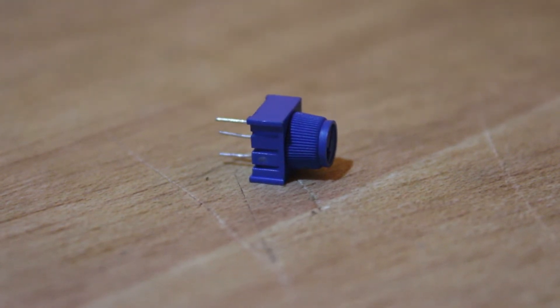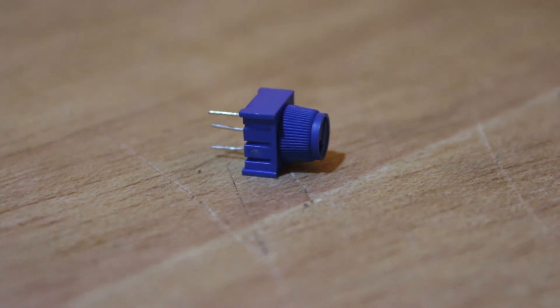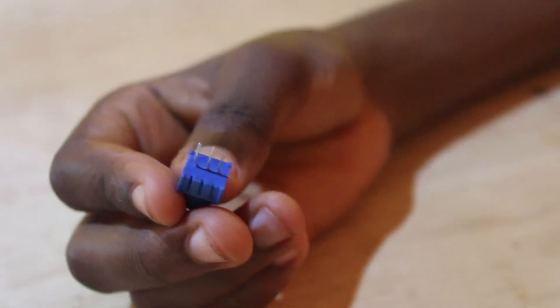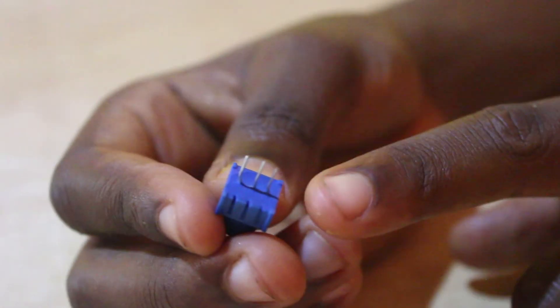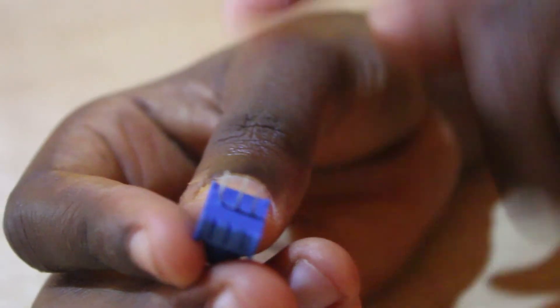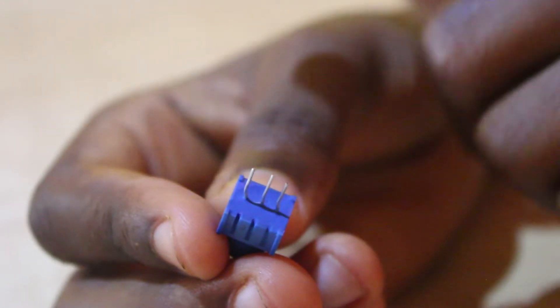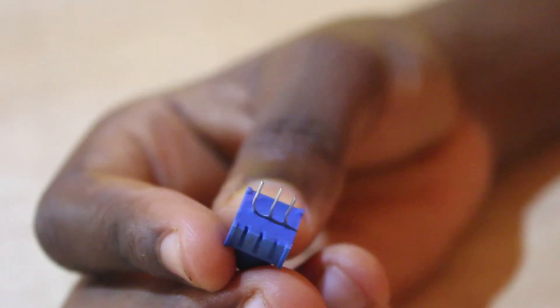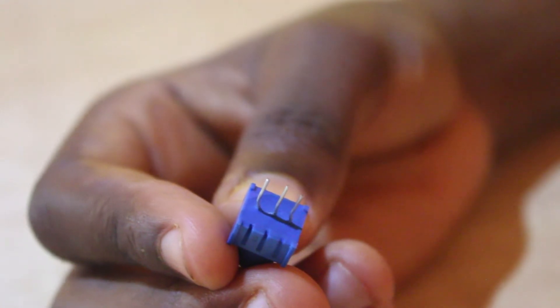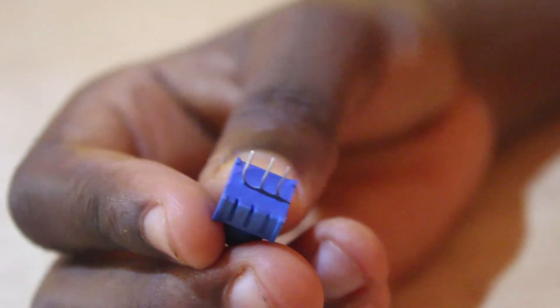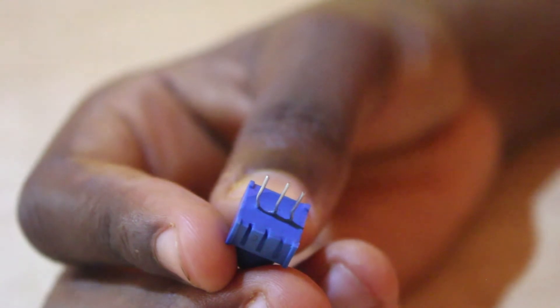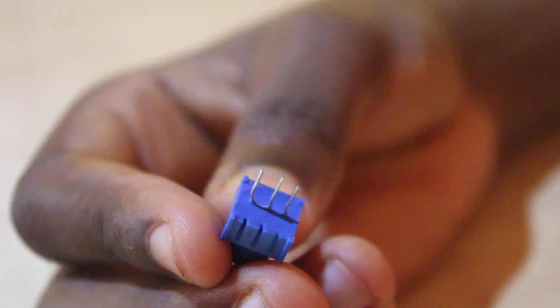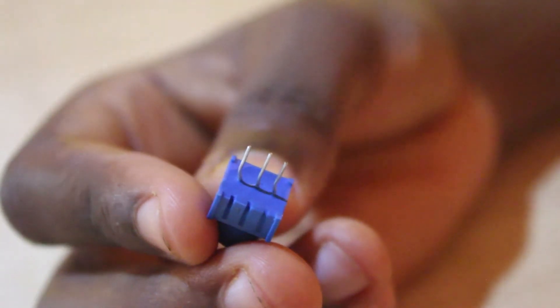The potentiometer has three pins. This one represents the positive pin of the potentiometer. The third, the far end, represents the ground or negative pin of the potentiometer. The one in the middle is the signal pin which gives a signal to the energy so that it can be reduced.